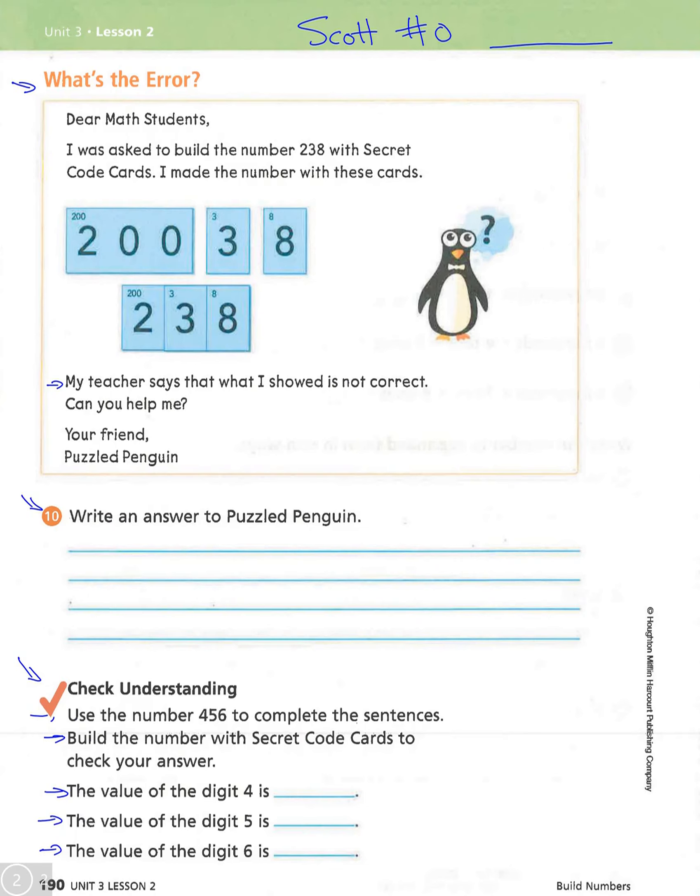So his error, Puzzled Penguin. Hopefully you saw that he did have his 200 cards, but then he had a 3 and an 8, and he was supposed to, up here, use a 30 card, and he didn't do that. He just kind of didn't place this card where it should have been. This card should have been in the ones, but you can't have that.